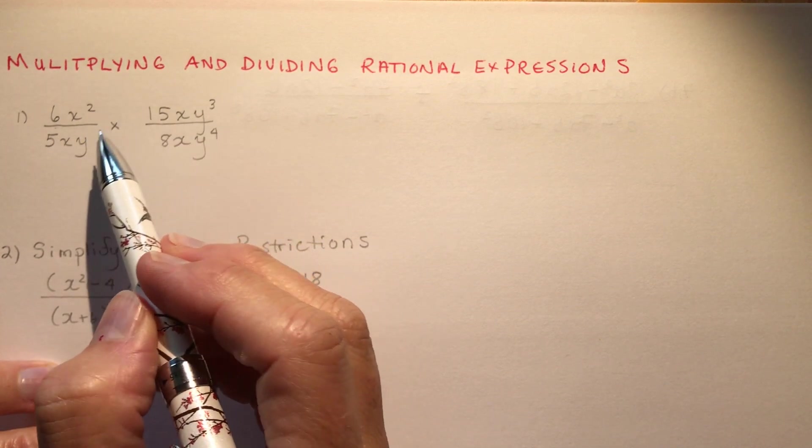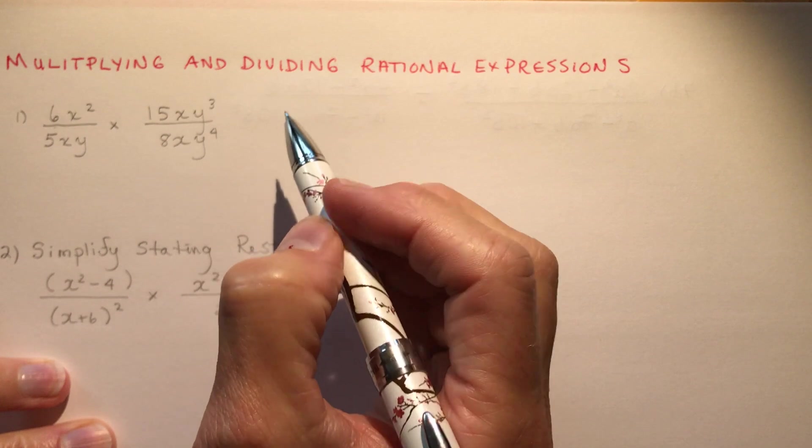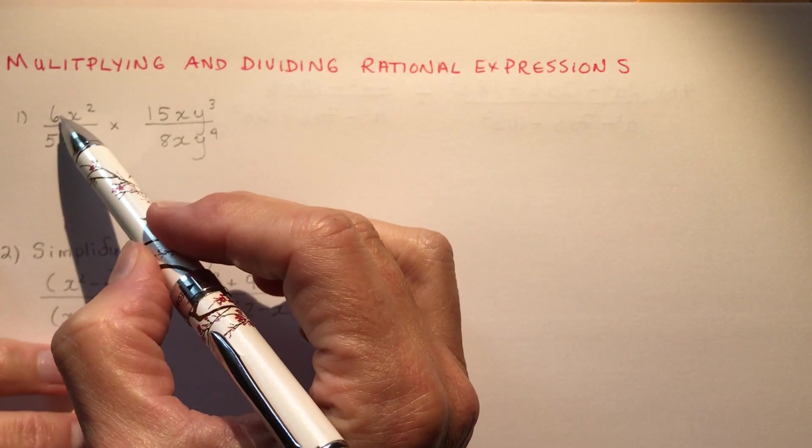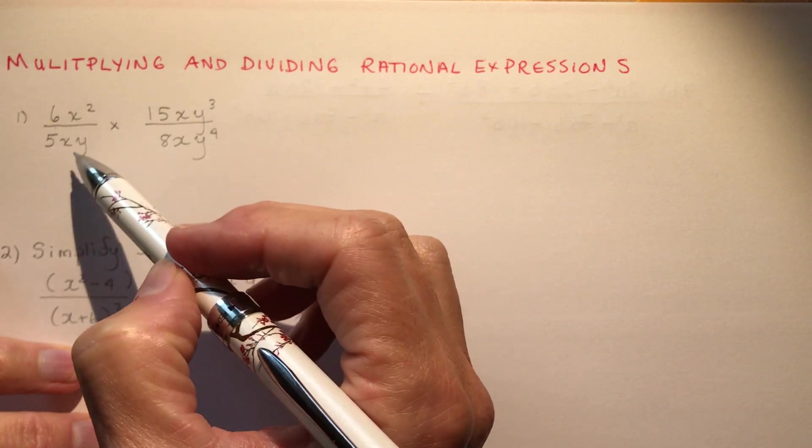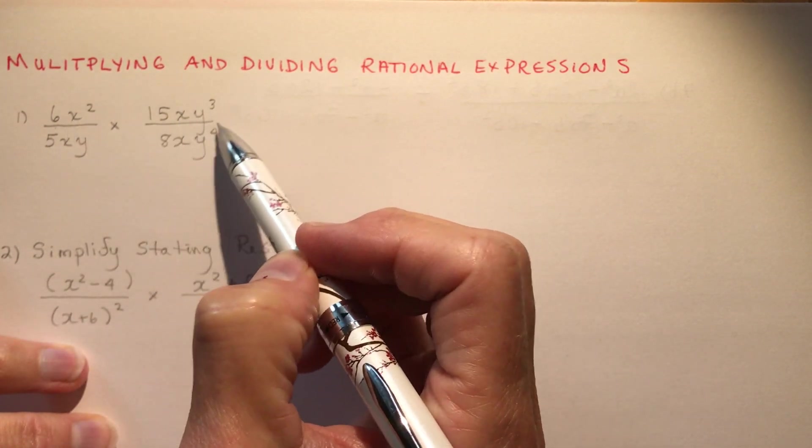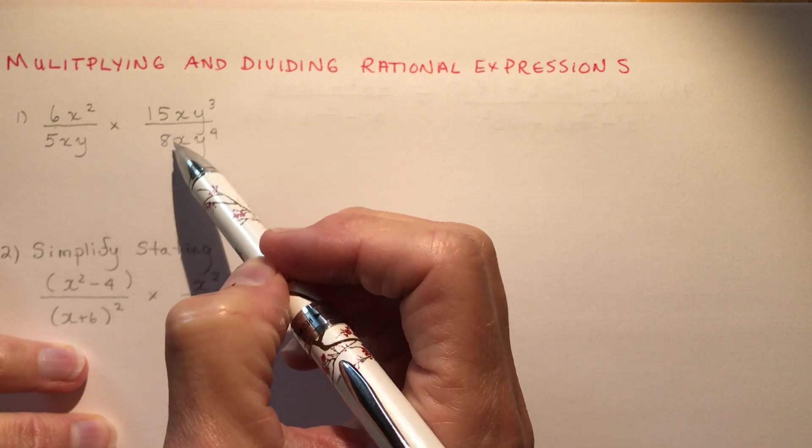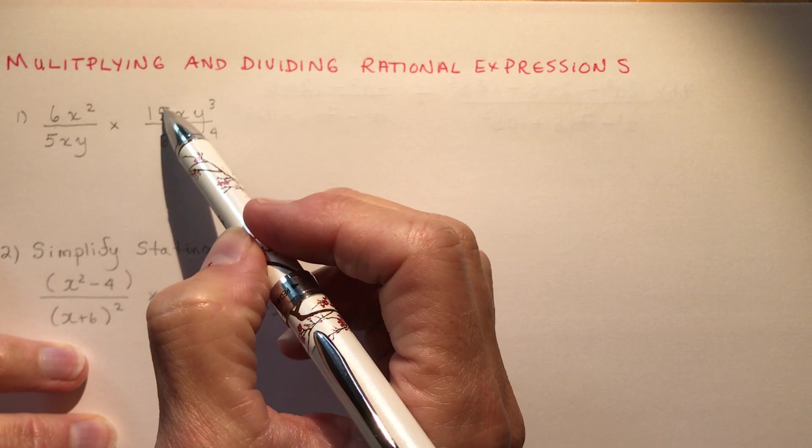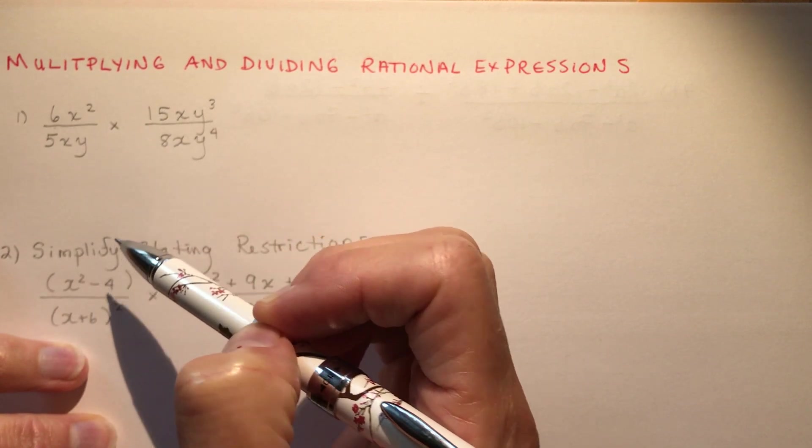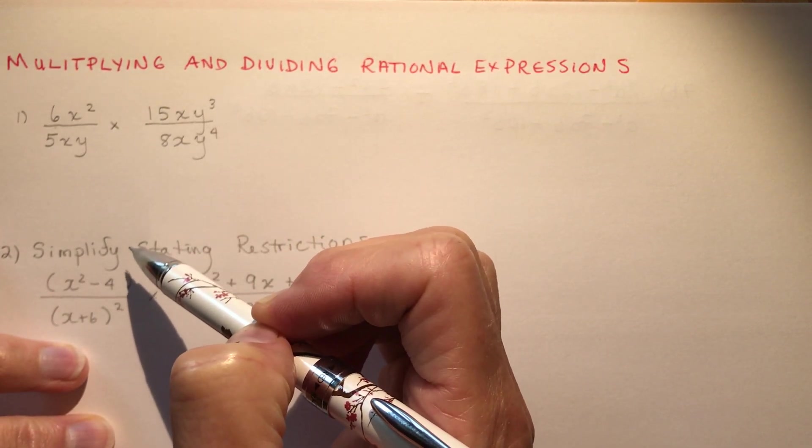Multiplying the tops together, multiplying the bottoms together. Now there are different ways to do this. You could multiply this times this and then simplify it, or you can look to see how many x's and y's you have and work with the coefficients separately as well. That would be my preferred method.